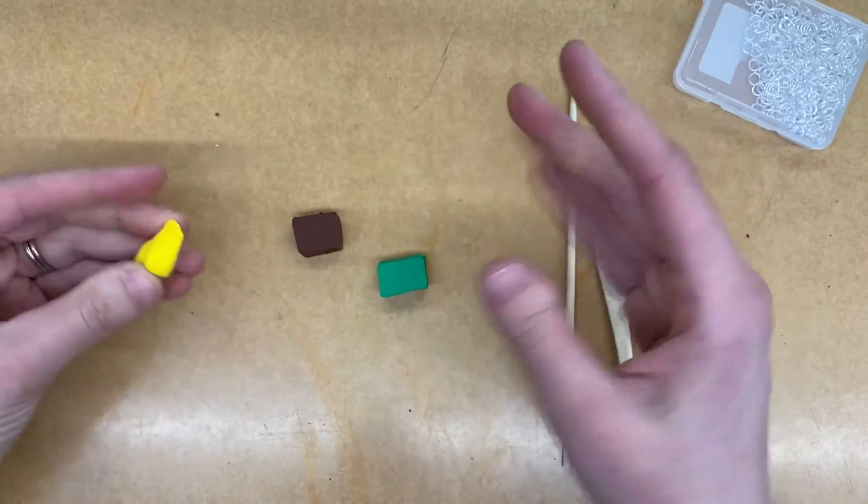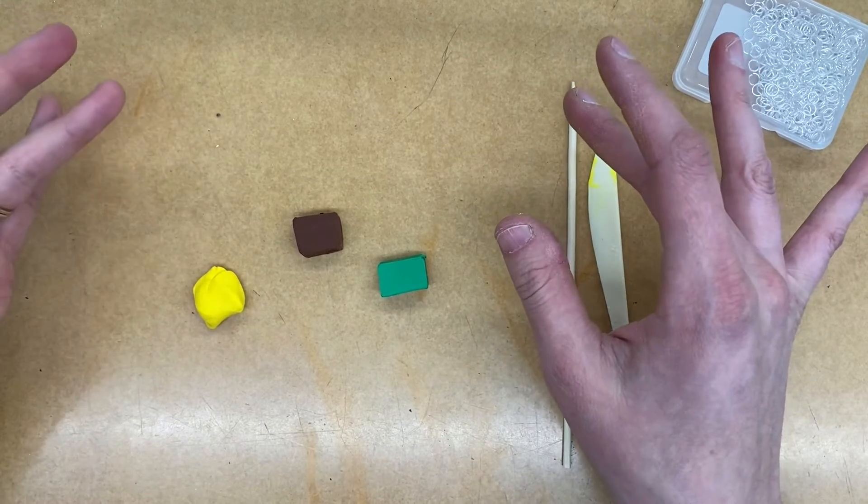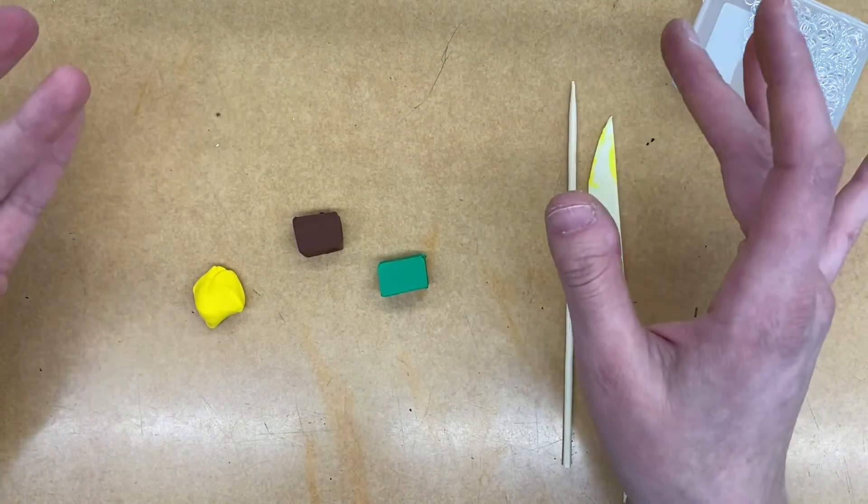Alright, so what I'm going to make and why I have these colors right here. I'm going to make a tiny little avocado keychain because, of course, why not?